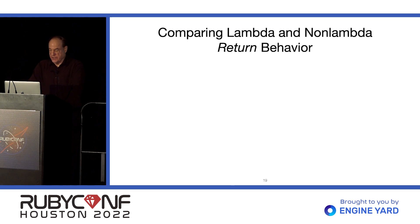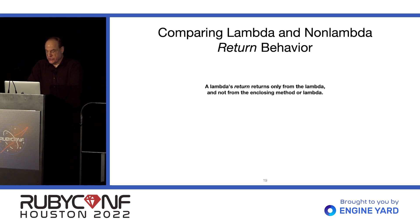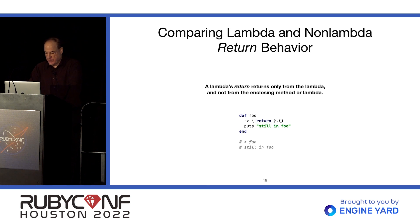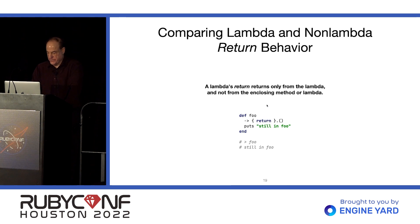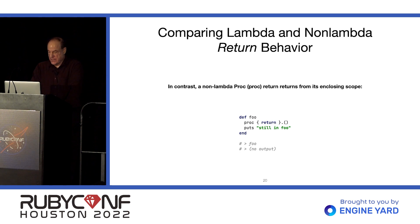Let's compare the behavior of Lambdas and non-Lambda Procs. The return behavior is different. A Lambda's return returns only from the Lambda and not from the enclosing method. As an example, we have a method foo with a Lambda executed in place — we do see the output, so the Lambda returned from itself but not from the foo method. In contrast, a non-Lambda Proc's return returns from its enclosing scope, so we don't see the output because it has returned from the method.